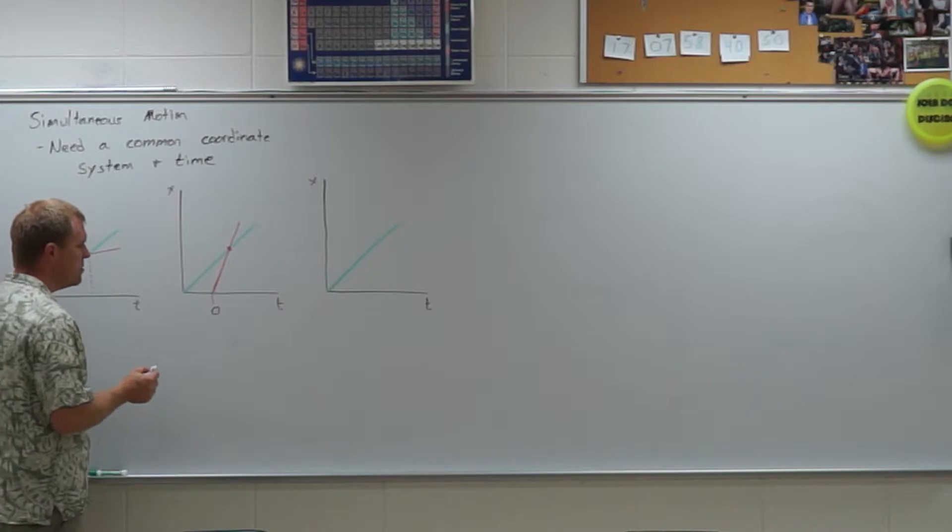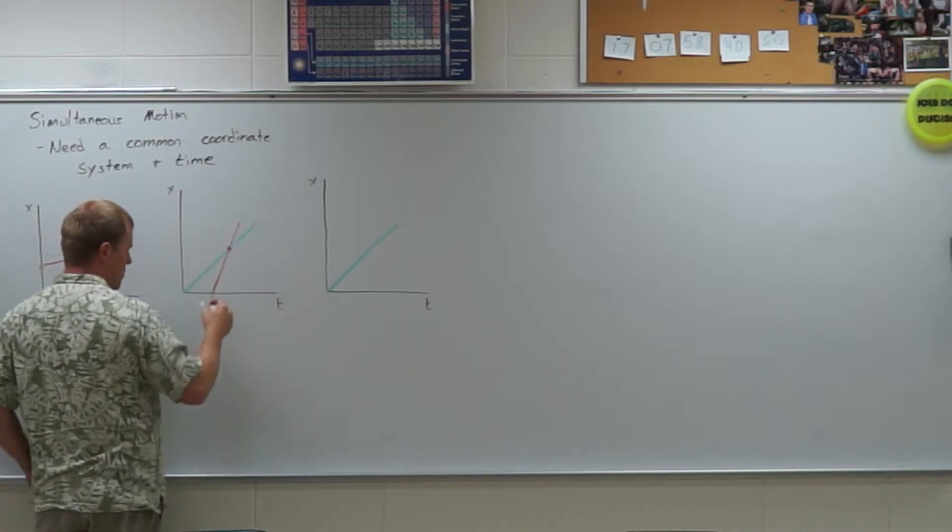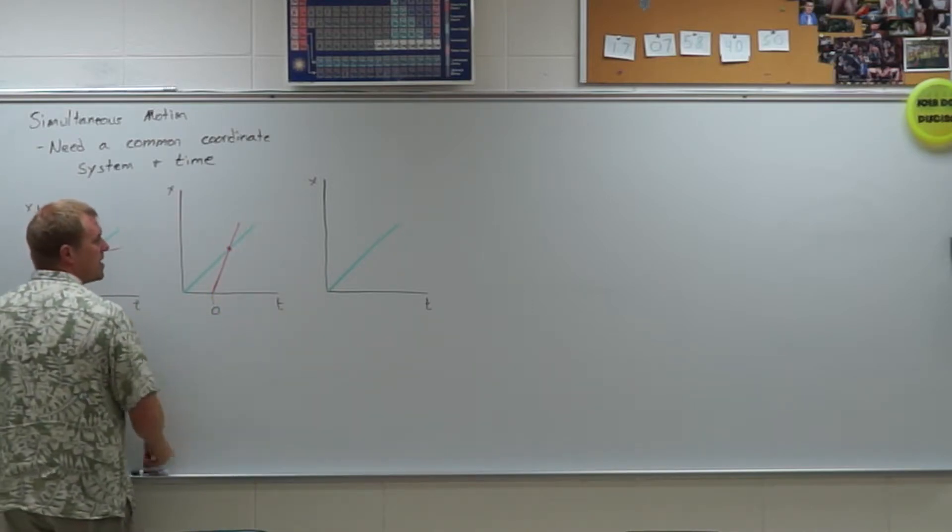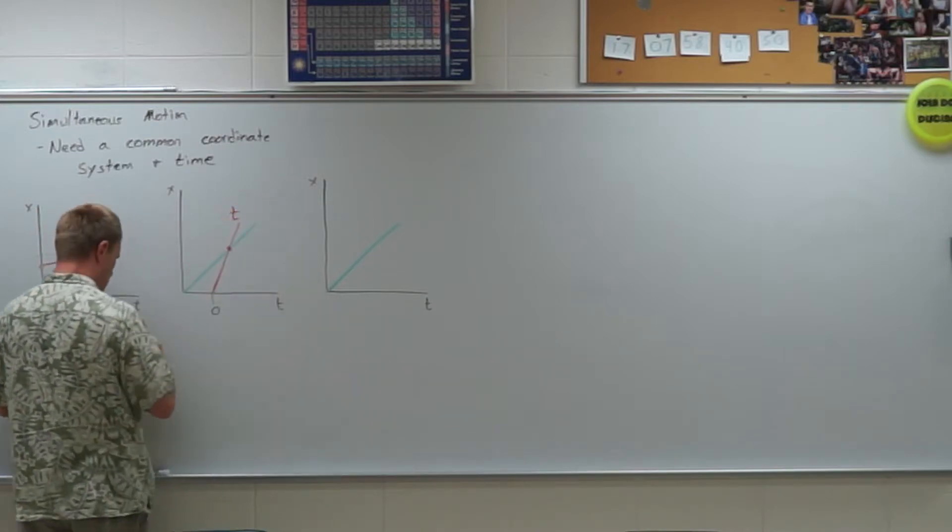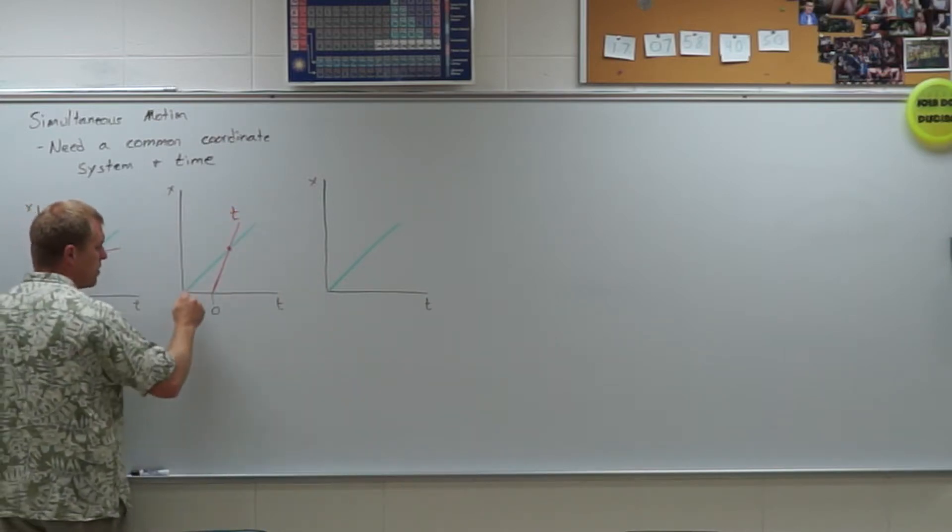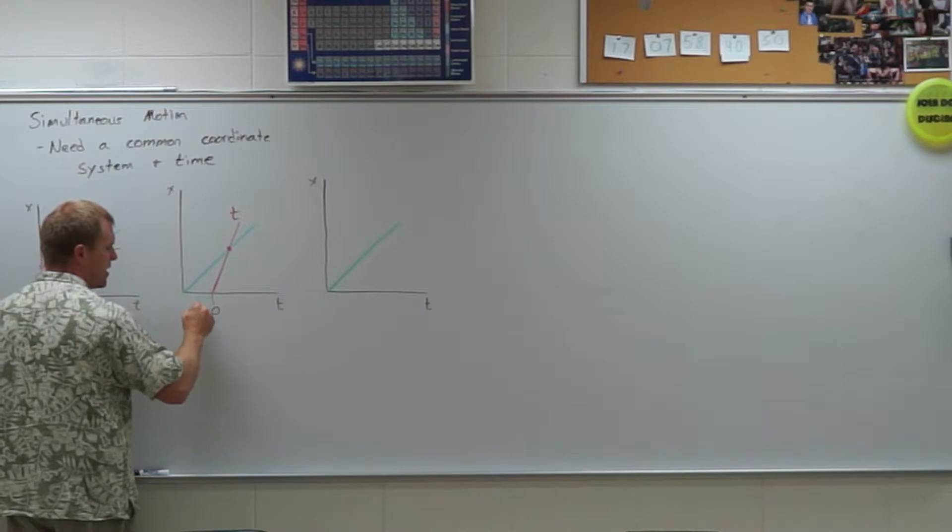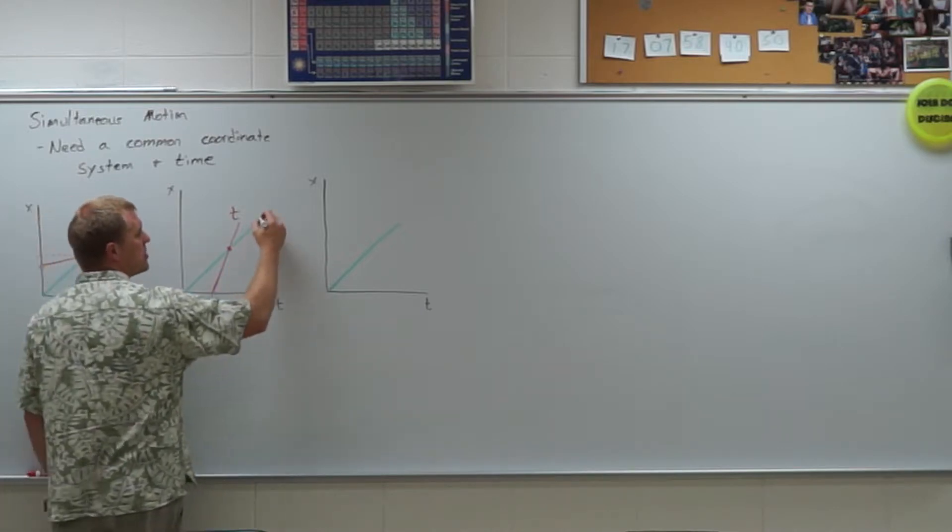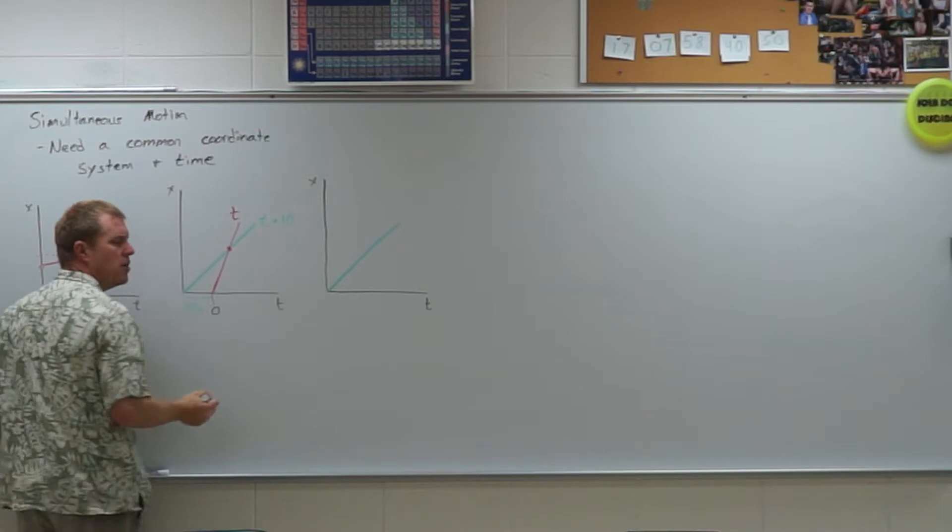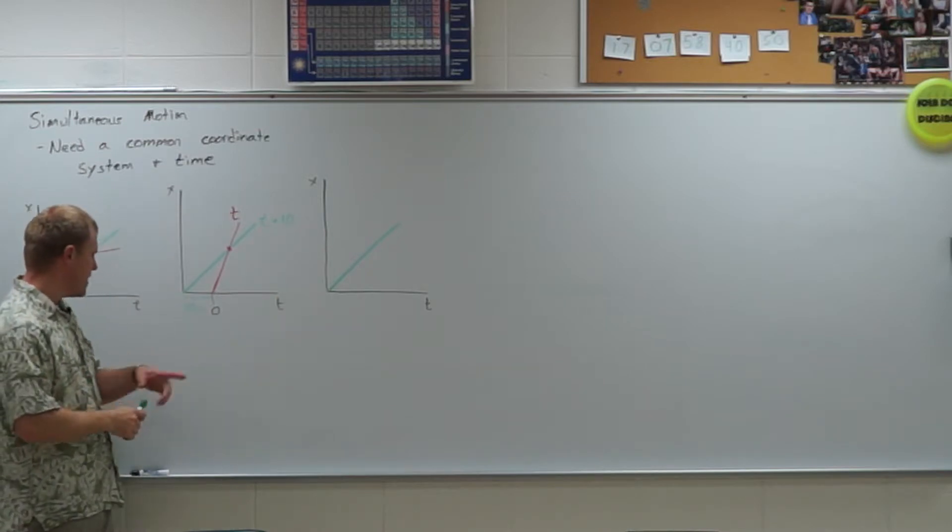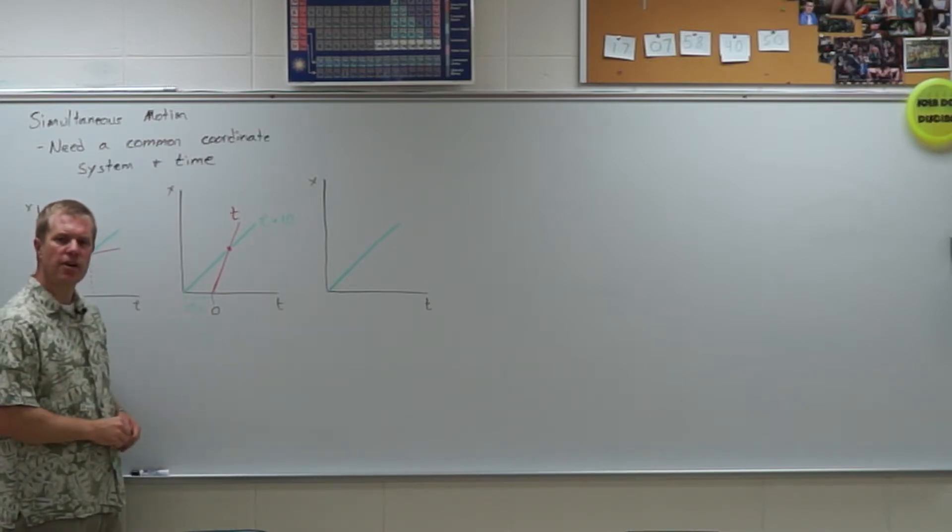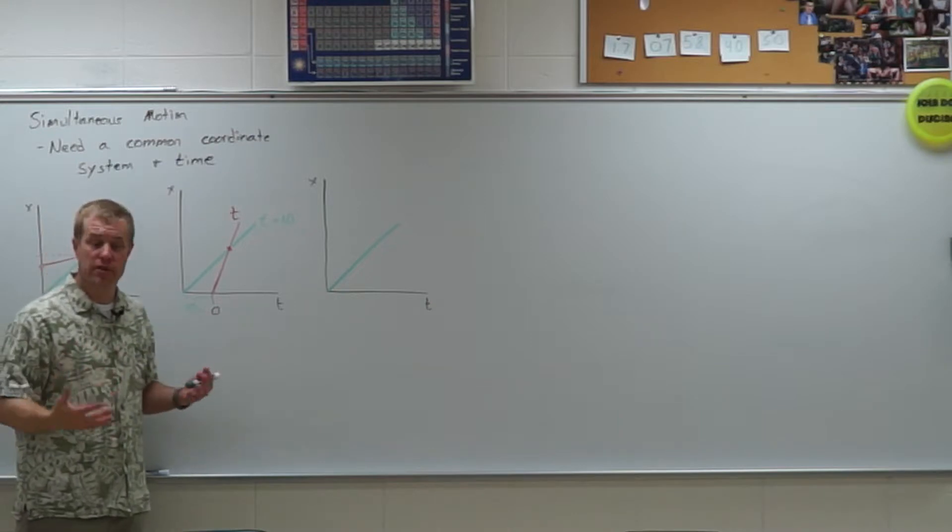The reason I like to do this is because this person's time, the red one, is going to be a time t, and the green person, let's say they start ten seconds off, the green person is going to be a time t plus ten. So I'm going to always add on time to the person that started first, or who's been traveling longer.